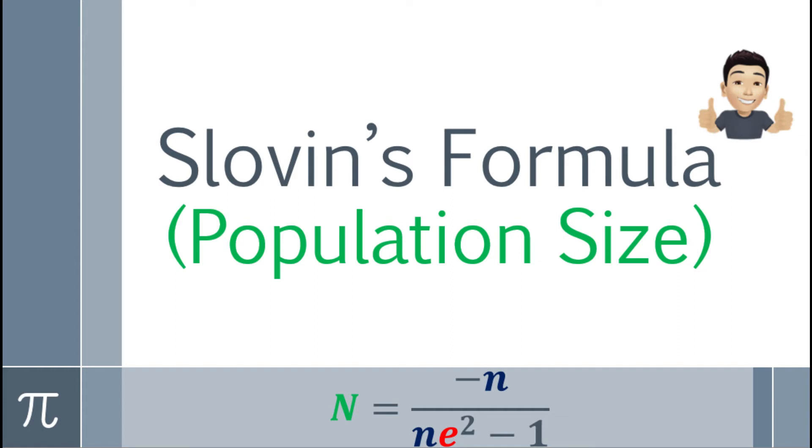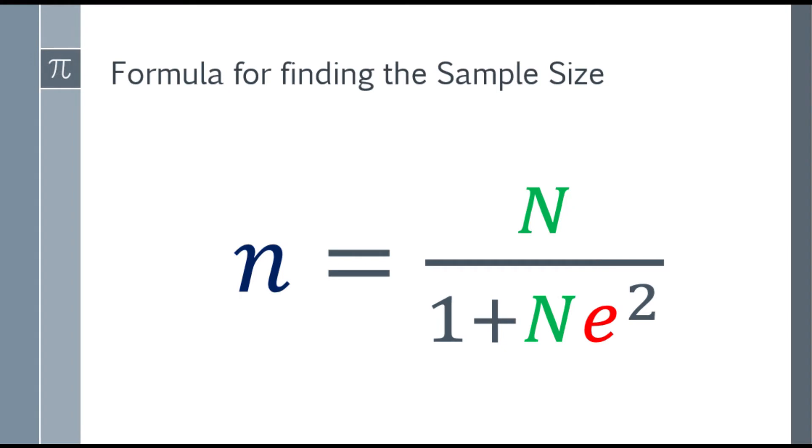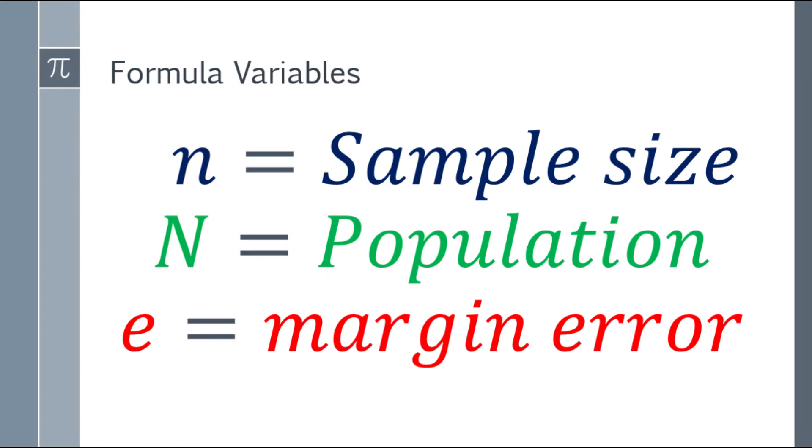In our previous video, we found the sample size and margin of error. Let's recall the formula for sample size: we have sample size equal to the population over the quantity 1 plus N times e squared. Recall the variables: small letter n equals sample size, capital N is the population, and small letter e is the margin of error.